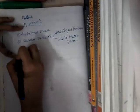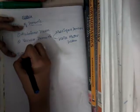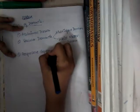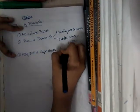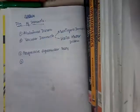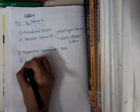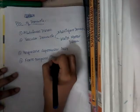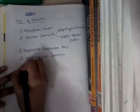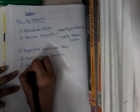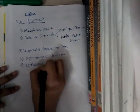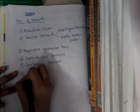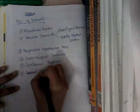We also learned about progressive supranuclear palsy, frontotemporal dementia, corticobasal degeneration, and in our last class, Parkinson's disease dementia.